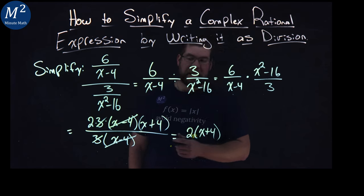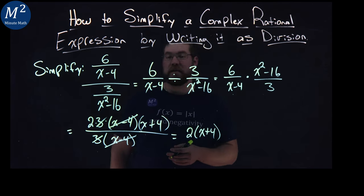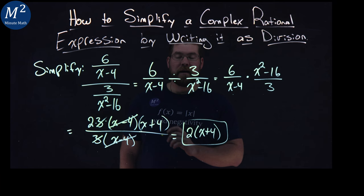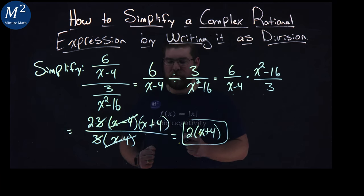And, to be honest, I like to keep it like that. If you really want to multiply that out, it would be 2x plus 8, but I like 2 times x plus 4 to really show the simplified, factored form.